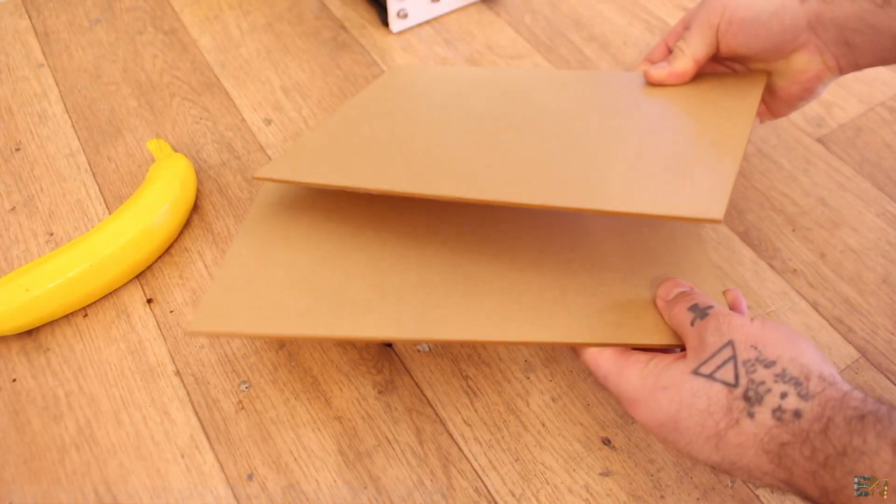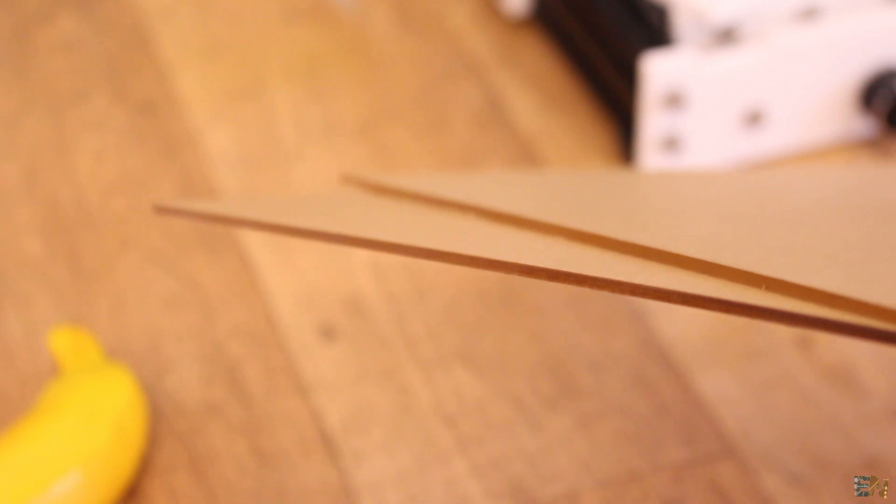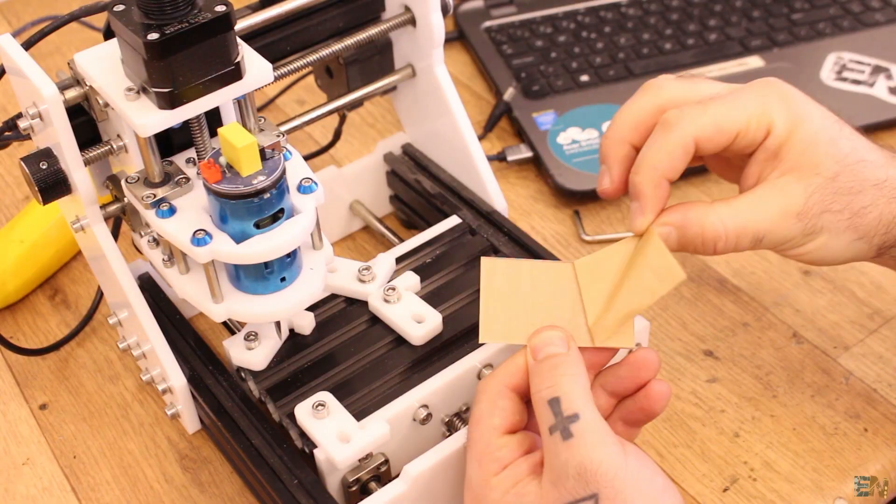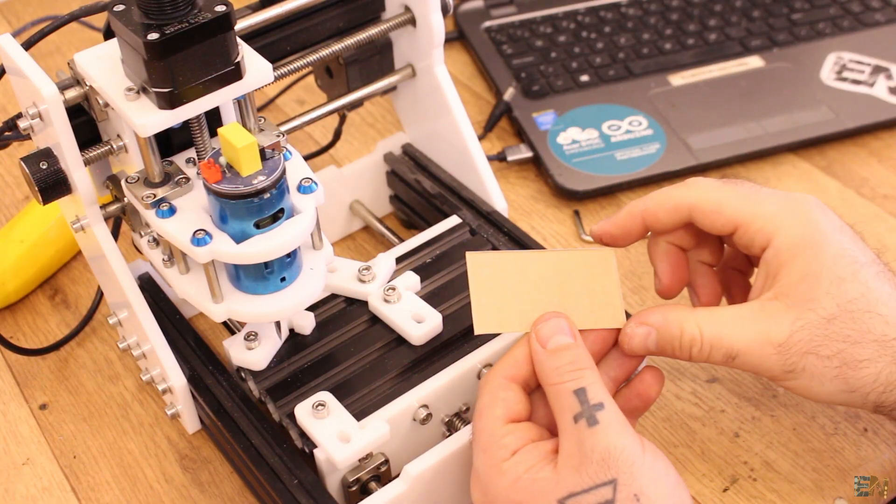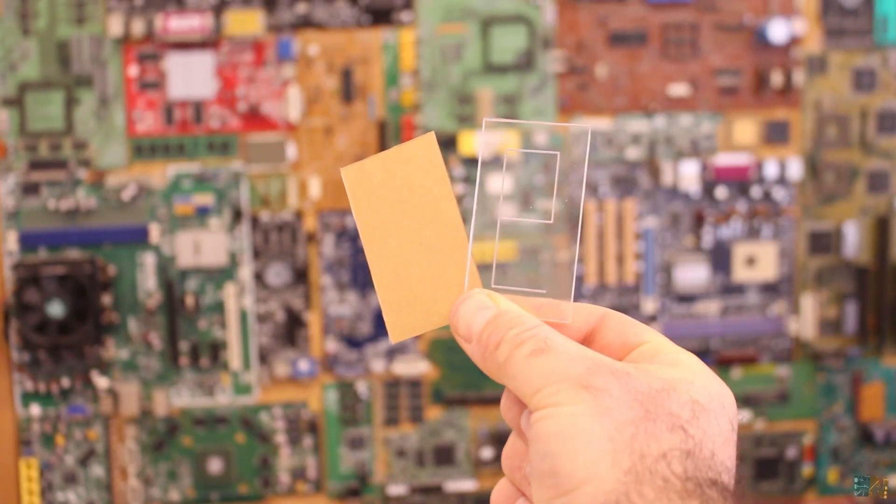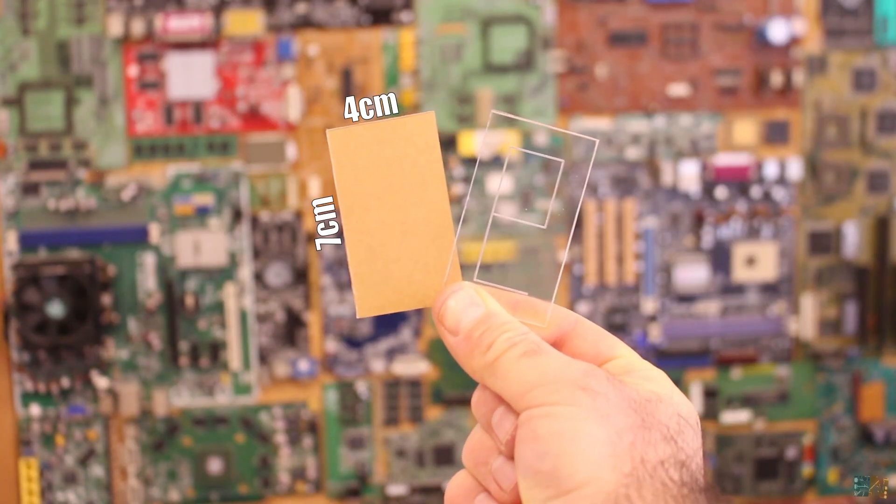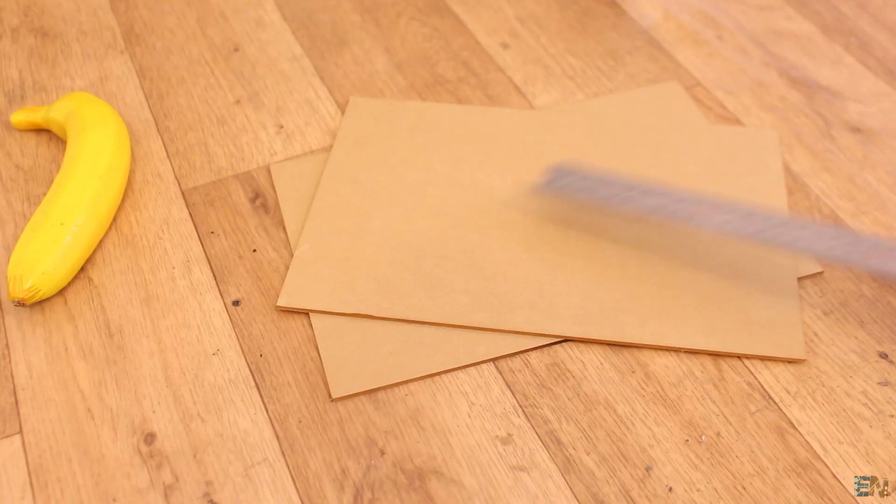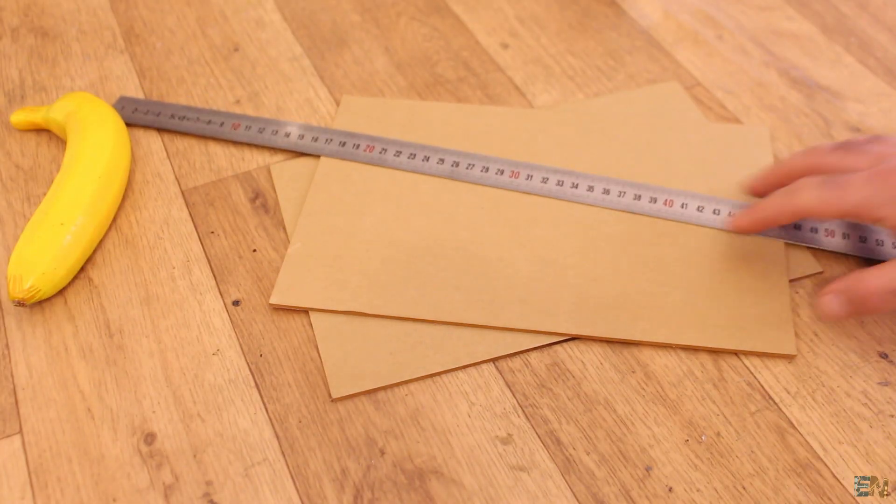We start with these 2mm thick acrylic boards. This is transparent acrylic, but is covered by a protective paper film. We remove that later in order to not damage the plastic while working. I've decided to make the shapes 4cm wide and 7cm tall, so we start marking those values on the boards.